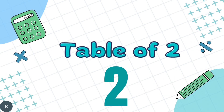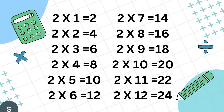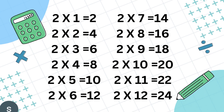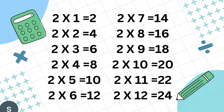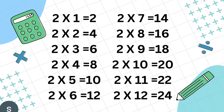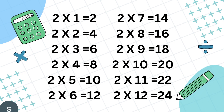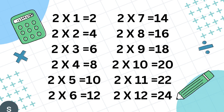Table of 2. 2 1's are 2, 2 2's are 4, 2 3's are 6, 2 4's are 8, 2 5's are 10, 2 6's are 12.